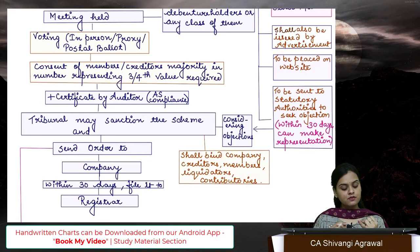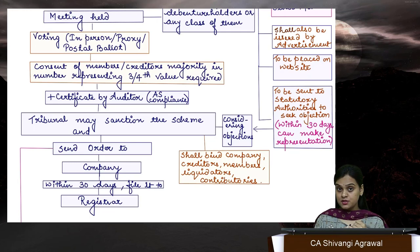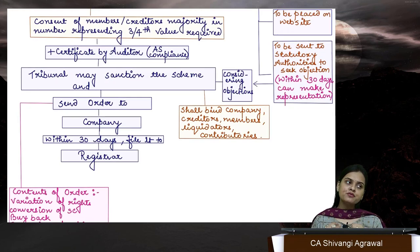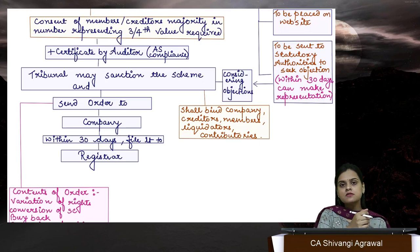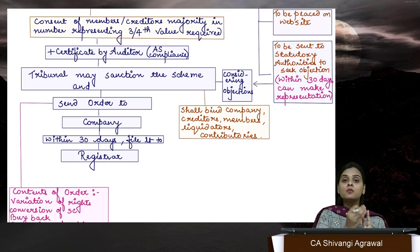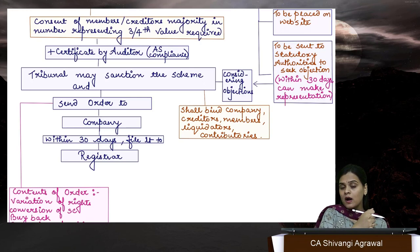They can vote in person, by proxy, or by postal ballot. The approval is not a normal one — it is a two-way approval. Majority in number of members holding or representing three-fourth value — and this is not of total, it is of the members who are present and voting. For example, if 500 members are present, majority is 251. So at least 251 members holding at least three-fourths of the share capital — say, if share capital is 10 lakh, then at least 7,50,000 share capital should be held by those 251 members who gave approval. The same goes for creditors: majority in number representing at least three-fourth value.